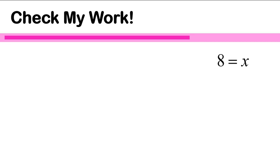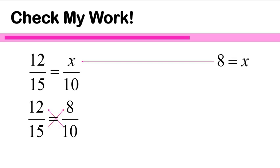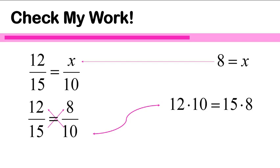We're going to check our work by substituting the value of 8 into that equation of equivalent fractions. Is 12 over 15 equal to 8 over 10? A good way to check is to use cross-multiplying. Is 12 times 10 equal to 15 times 8? When we multiply those numbers, we get 120 on both sides of the equal sign. Our work is correct. We've successfully solved when x is in the upper right-hand corner.